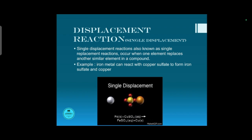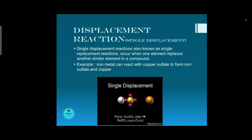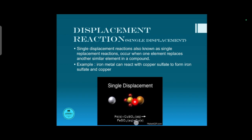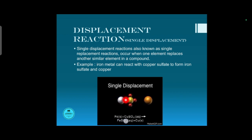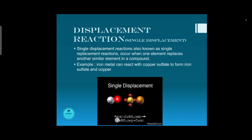Displacement reaction, or single displacement reaction, is also known as single replacement reaction. This occurs when one element replaces another similar element in a compound. For example, copper sulfate reacts with iron — the iron attaches to the sulfate ion and copper is freed, so copper is replaced by the iron atom. This is a single displacement reaction.